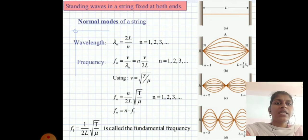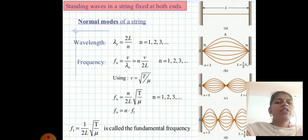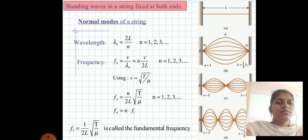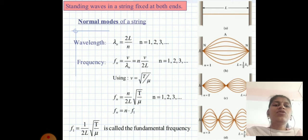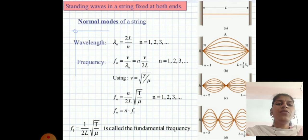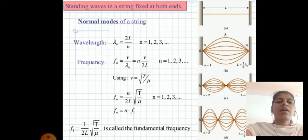Standing waves in a string fixed at both ends — normal modes: λₙ = 2L/n, where n = 1, 2, 3, … The frequency fₙ = v/λₙ = nv/(2L). Using v = √(T/μ), we get fₙ = (n/2L)√(T/μ).